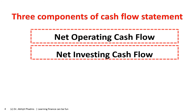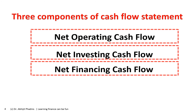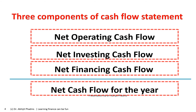Now I'm talking about the net cash flow — net meaning inflow minus outflow. If inflow is larger than outflow, it carries a plus sign; if inflow is smaller, it carries a minus sign. This applies to each of those three buckets, and the net result of all three gives the net cash flow for the year — meaning our bank balance either increased or decreased by that amount.